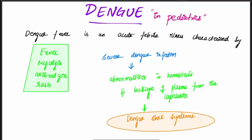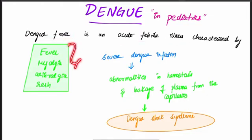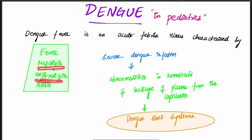Let's discuss one of the more common and most important topics: Dengue in pediatrics. Dengue fever is an acute febrile illness characterized by four major symptoms — fever, myalgia (muscle pain), arthralgia (joint pain), and rash.